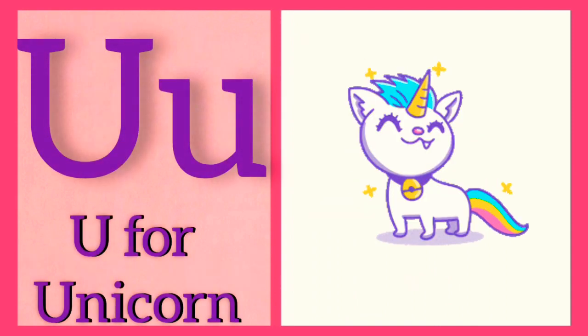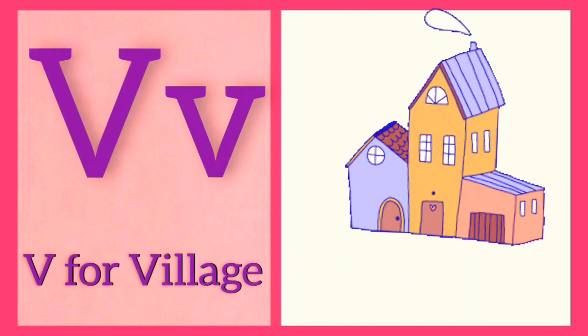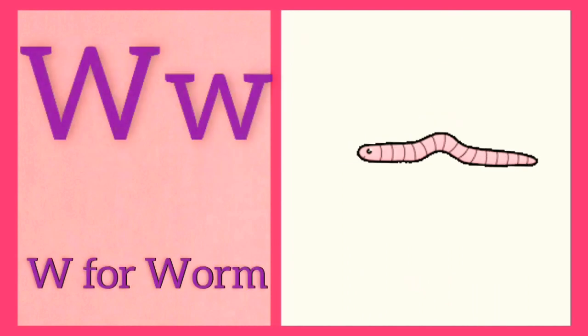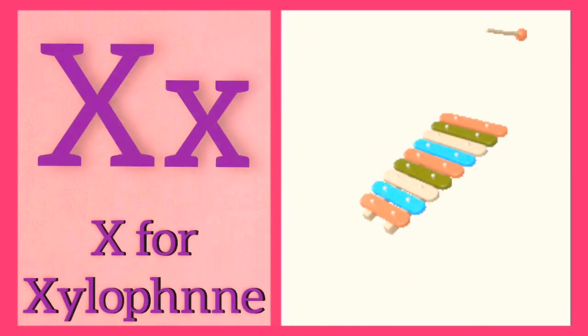U. U for Unicorn. V. V for Village. W. W for Worm. X. X for Xylophone.